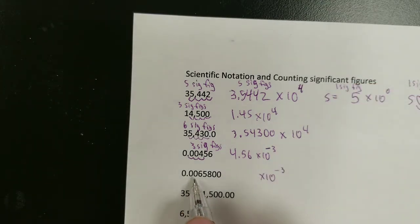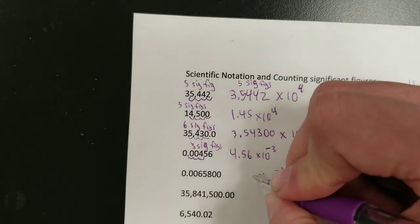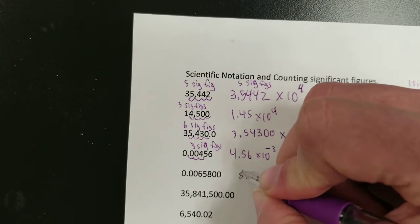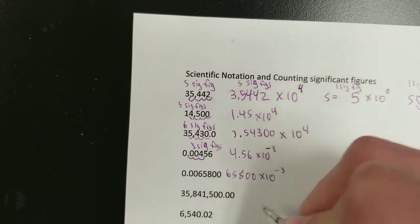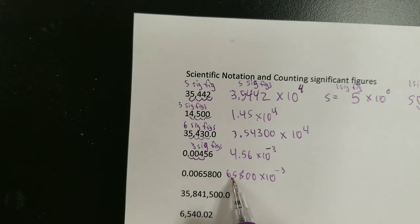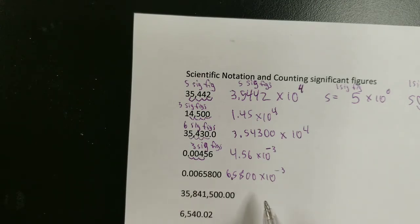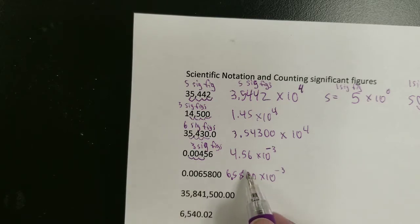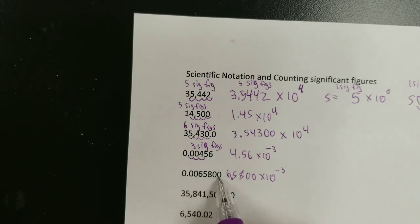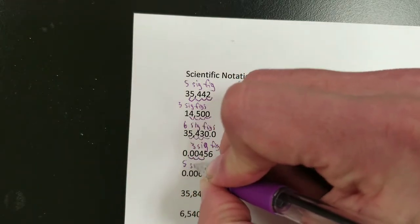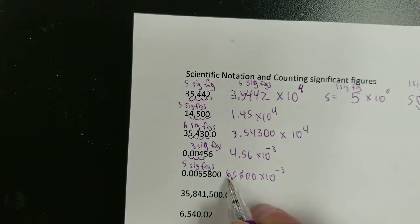We're going to ignore these zeros at the beginning. So 6, 5, 8. But because there's a decimal, the trailing zeros count — so 0, 0, 8, 5, 6. So 6.5800 times 10 to the negative 3rd is the correct way to write this as scientific notation. These zeros are at the end and there's a decimal, so you include the zeros in the scientific notation. That's 1, 2, 3, 4, 5 sig figs.